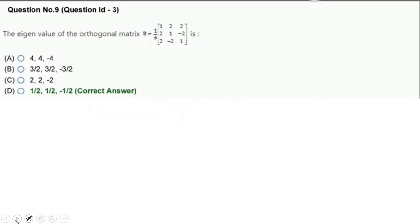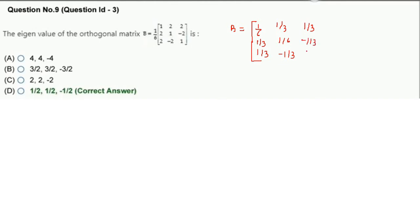Next question: Eigenvalues of the orthogonal matrix B. The matrix is (1/√6) multiplied by a 3×3 matrix. Writing out the elements: 1/√6, 1/√3, 1/√3; 1/√3, 1/√6, −1/√3; 1/√3, −1/√3, 1/√6. The trace = diagonal sum = 1/6 + 1/6 + ... = 1/2.